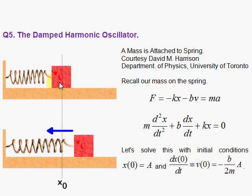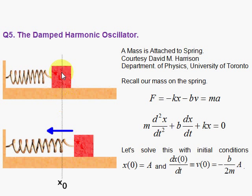The Ideal Spring obeys Hooke's Law, and Hooke's Law is given by the little equation f equals minus kx. We're going to take the equilibrium position — that is, when the spring is neither stretched nor compressed — to be x₀, which I'm going to call 0. This is x equals 0. So there's no force that the spring exerts on the mass because the spring is neither stretched nor compressed.